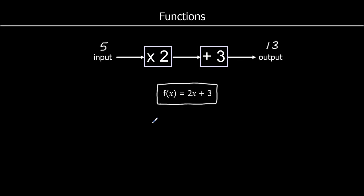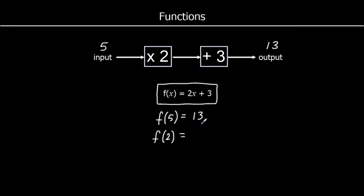So if we put something into the function, we're going to write that as f(5) in this example. This means we're putting 5 into the function. So we're going to have 2 times 5 plus 3, which is 13. If we wrote f(2), that means we're putting 2 into the function, so 2 times 2 plus 3 is 7. And we can put any number into this function — so 2 times negative 3 is negative 6, plus 3 is negative 3.